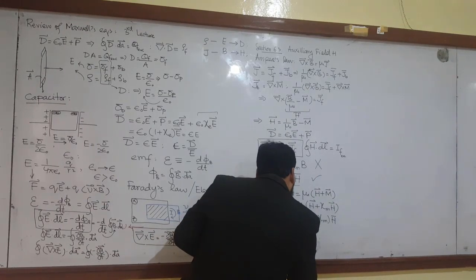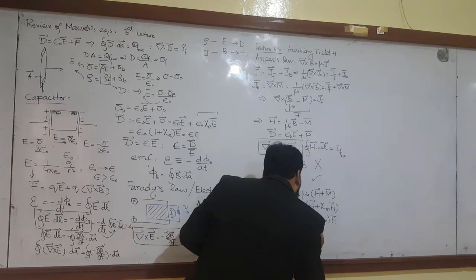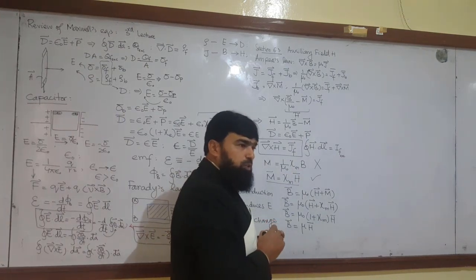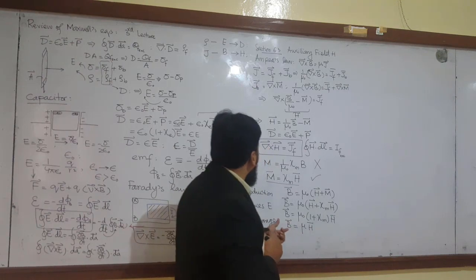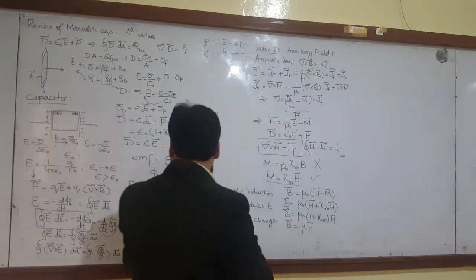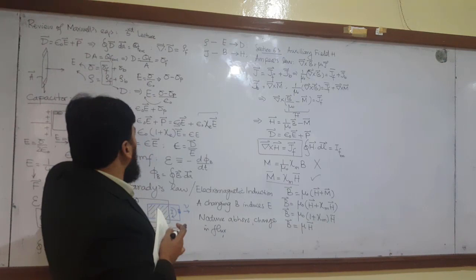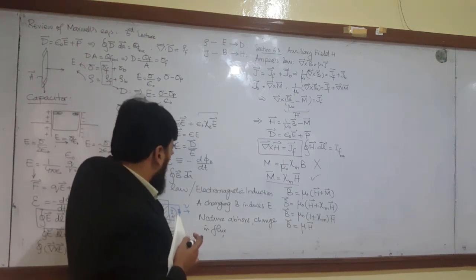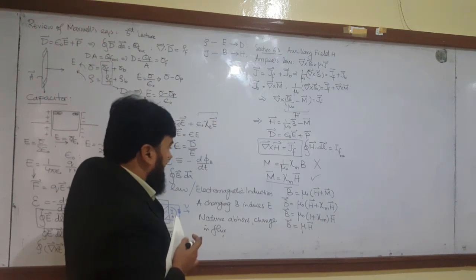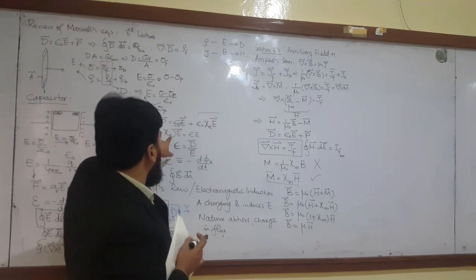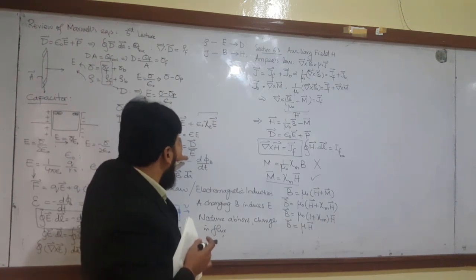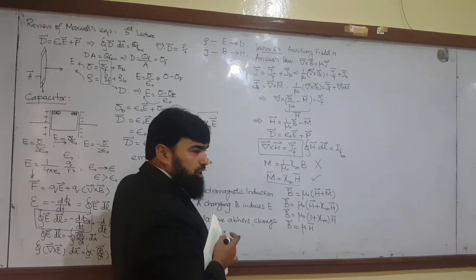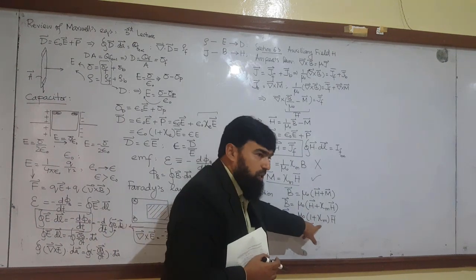And this will be equal to B equals mu H. Now, this one seems in accordance to our electrical situation like this. Epsilon naught, so there is mu naught, one plus chi E. Here is chi M and now here is E and there is H. So there is a little change from this one over here.